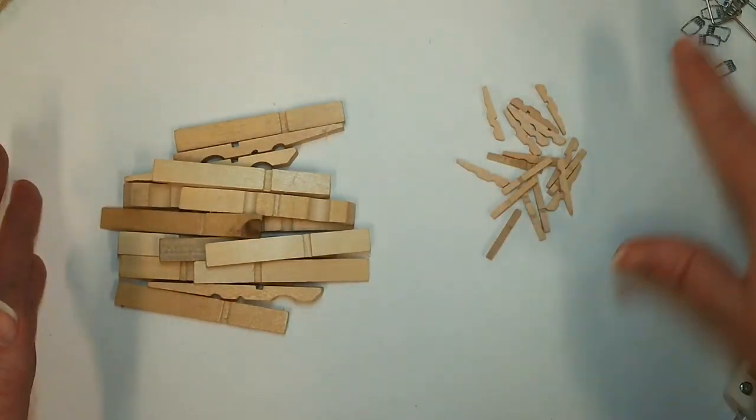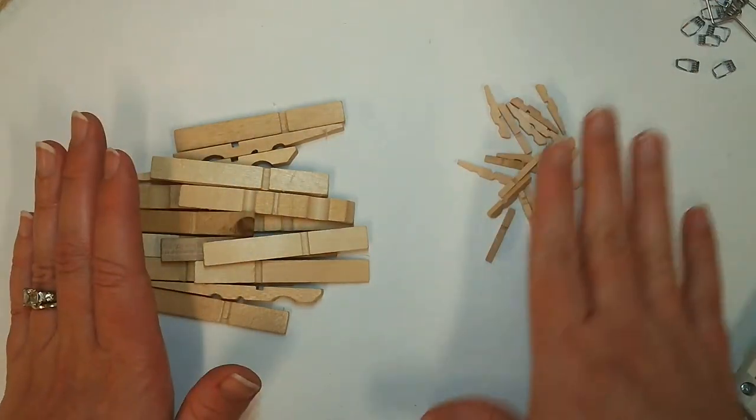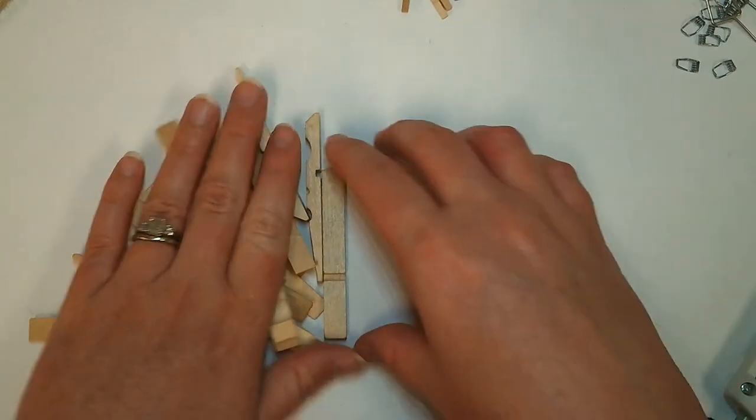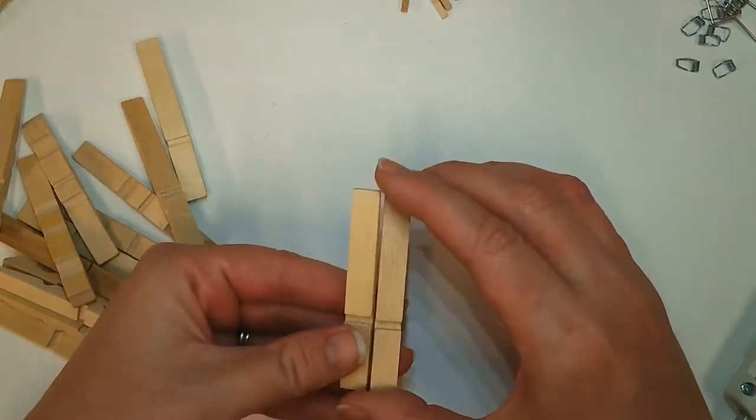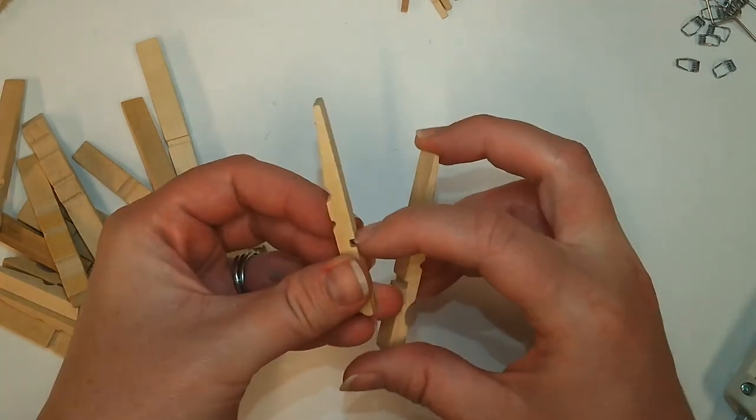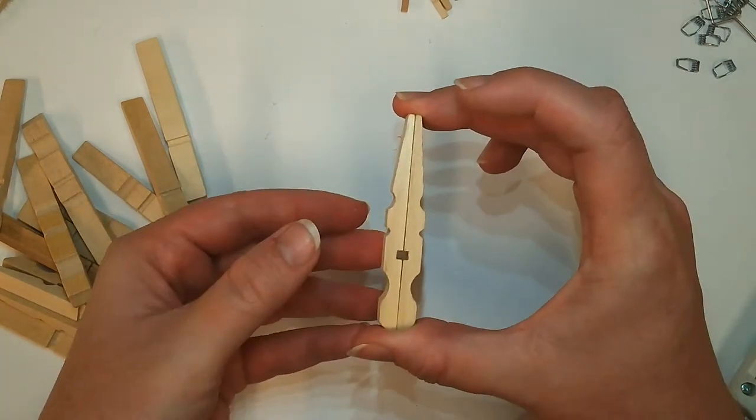Once you have all of your metal pieces separated from your clothespins, go ahead and start with your bigger clothespin pieces. What you'll do is just grab your first two and you're going to be gluing them together so that that little notch, you're going to match those together just like this.